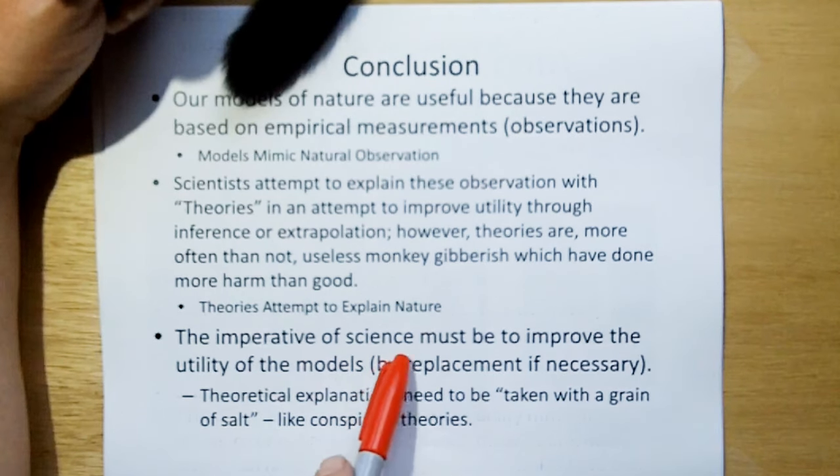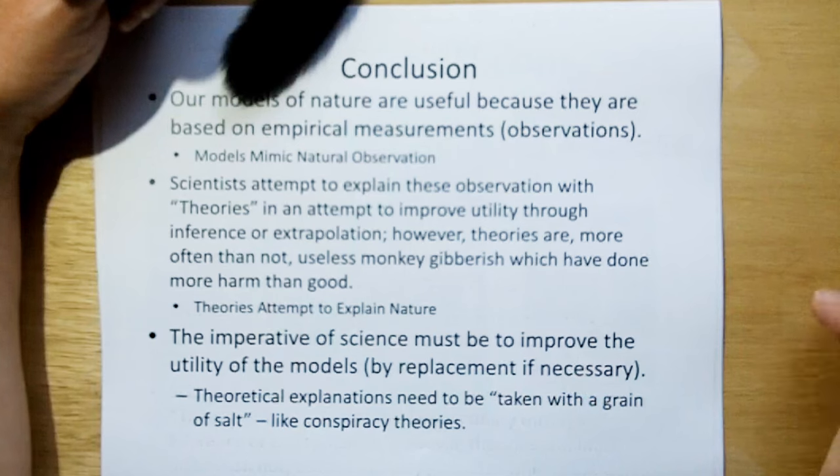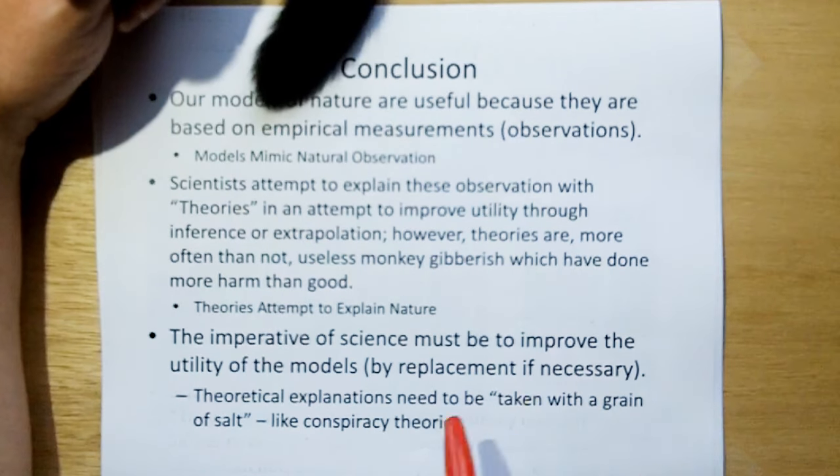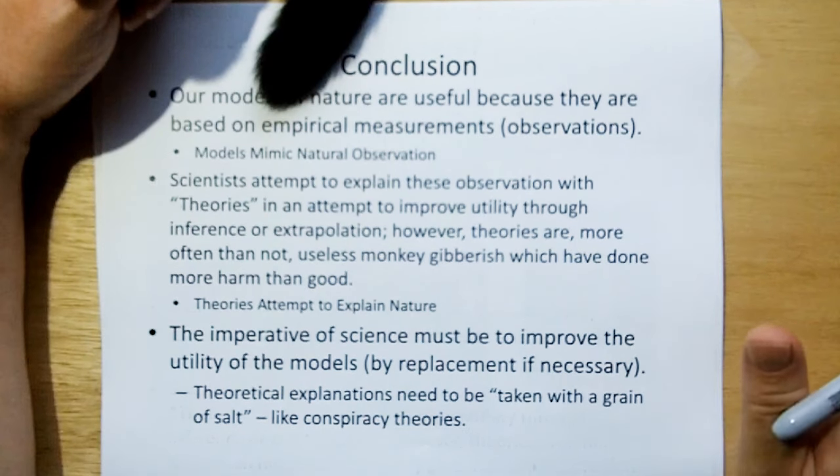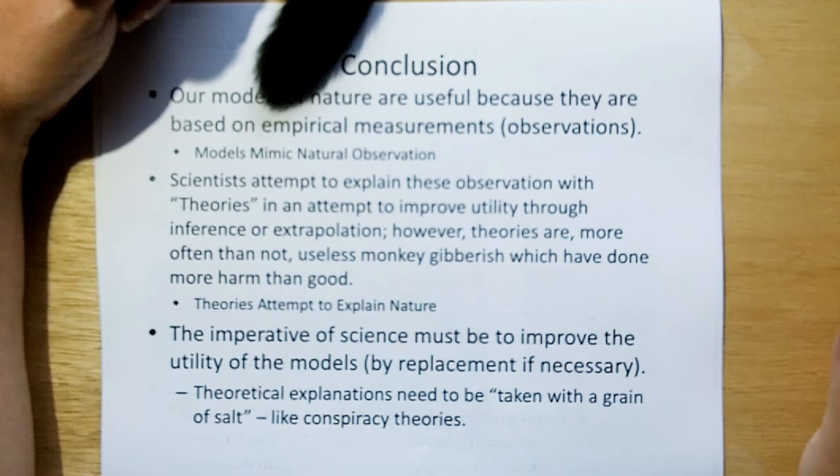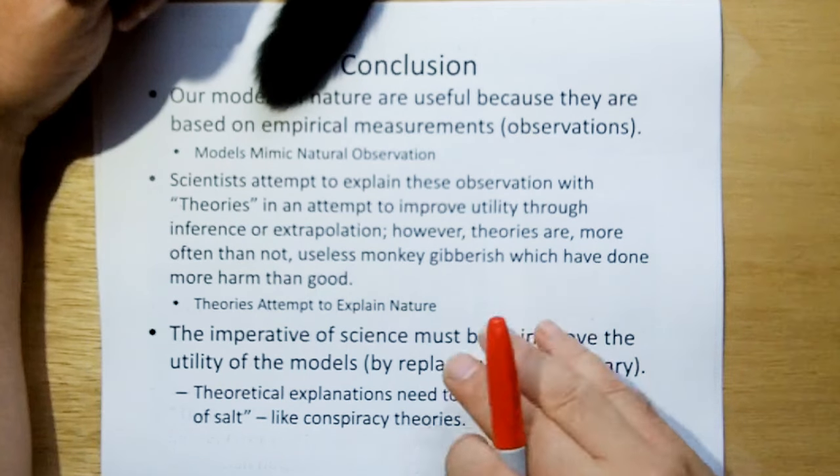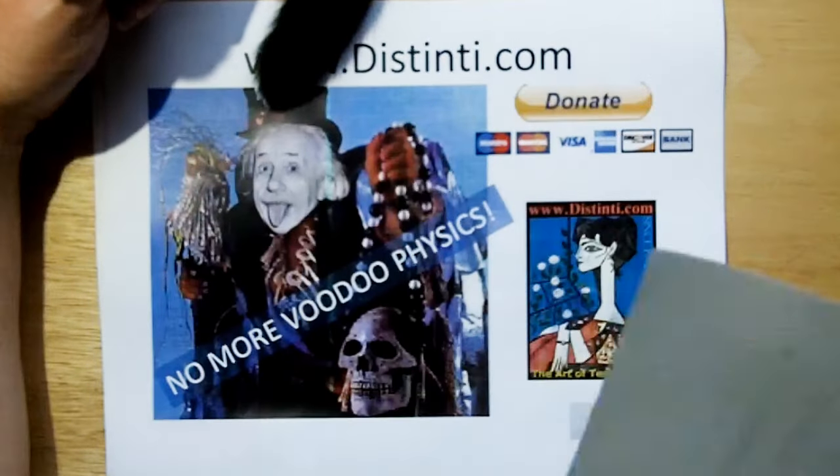The imperative of science must be to improve the utility of models by replacement if necessary. Theoretical explanations need to be taken with a grain of salt like conspiracy theories. Without confirmation, you can use them to try to extrapolate or infer a deeper meaning and a better model. But without experimental confirmation, you're basically just guessing. Thank you very much.